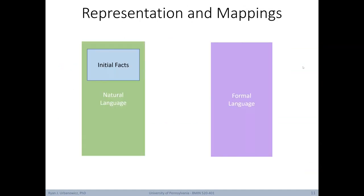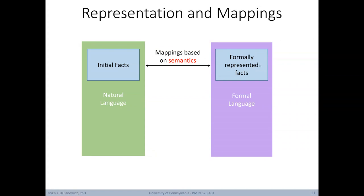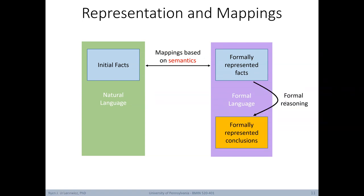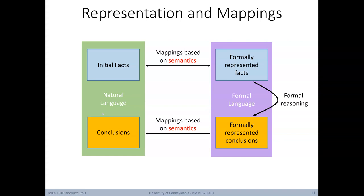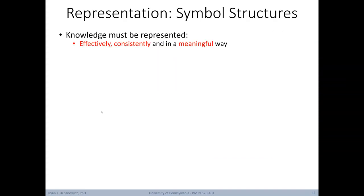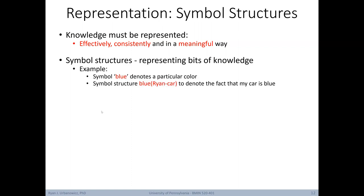Let's look at representation and mappings. On the left we have natural language with initial facts or knowledge. Our first step is to map that to a formal language — mapping based on semantics to formally represented facts. Now that we have formally represented facts, we can apply formal reasoning strategies to derive formally represented conclusions. At that point, we use semantic mapping back to natural language to obtain conclusions that people can understand. A formal system needs to represent knowledge in an effective, consistent, and meaningful way.